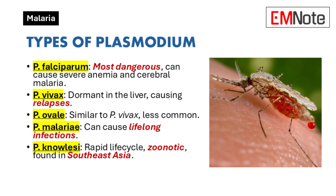Plasmodium vivax is known for its ability to remain dormant in the liver, causing relapses months or even years after the initial infection. While it generally leads to milder symptoms than Plasmodium falciparum, it can still cause significant morbidity. This species is primarily found in Asia, Latin America, and some parts of Africa.